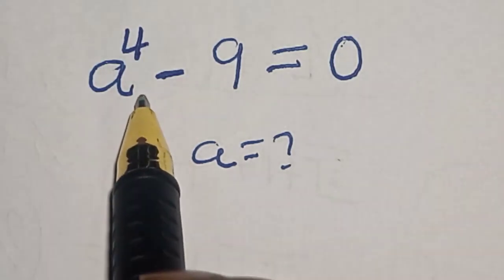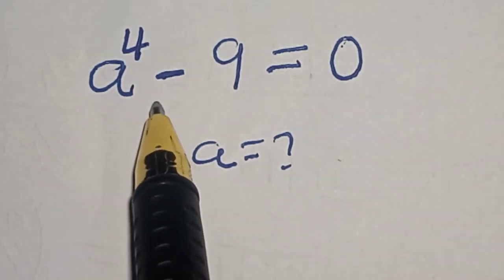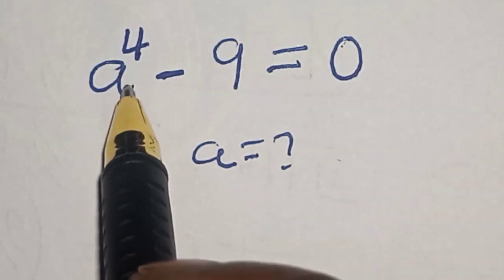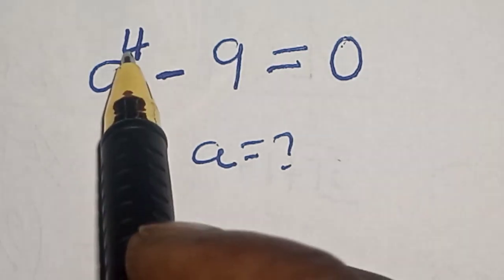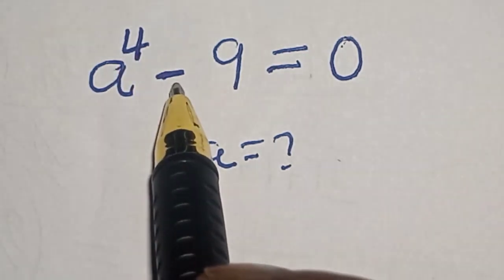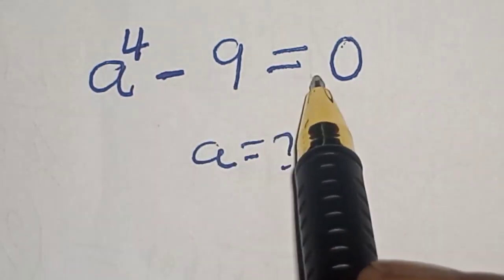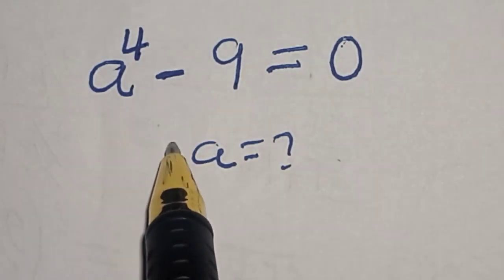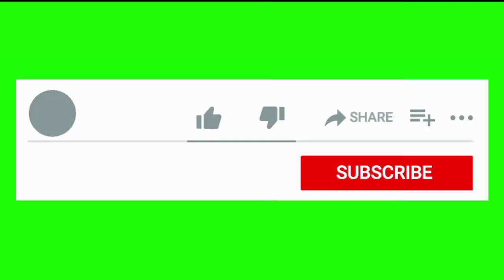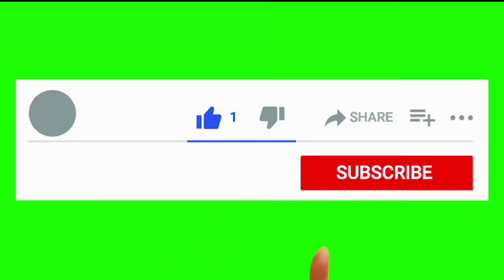Hello, welcome to MathGist. In this class, we want to find the value of a from this equation: a raised to power 4 minus 9 is equal to 0. Please like, comment, share and subscribe.